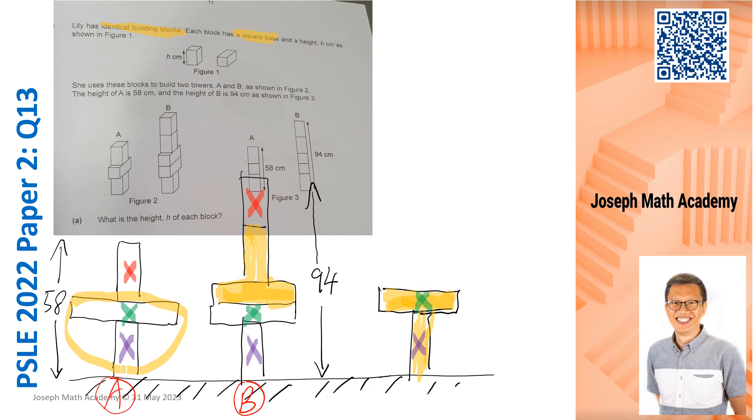To find the height of this new structure here, I can simply take 58 from Tower A. No, apology, I have to use Tower B first. So let's use Tower B. So Tower B, 94, subtract away Tower A, I get 36.